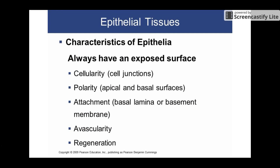So there are four big classes of tissues. You're going to have epithelial, connective, muscular, and nervous. We're going to be starting off by talking about epithelial and we're going to kind of work our way right through there.